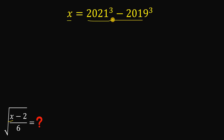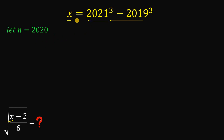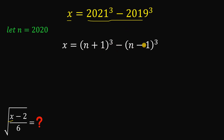How do we simplify x? One thing to notice is we have 2021 and 2019. We could let a variable equal 2019, but since the middle of 2019 and 2021 is 2020, why not let n equal 2020? That way, x simply equals (n+1) cubed minus (n-1) cubed, or (2020+1) cubed minus (2020-1) cubed.